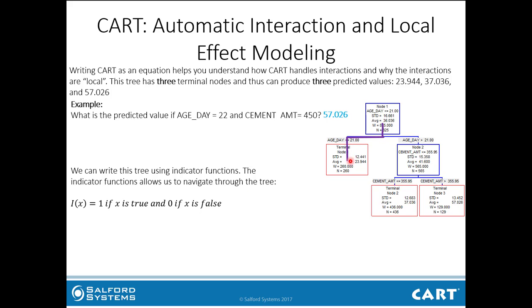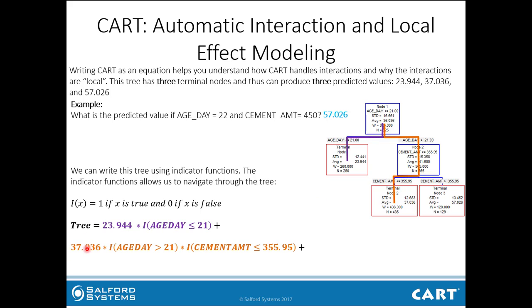Looking at the purple portion of the tree, we have 23.944 — the average for terminal node 1 — multiplied by the indicator for age_day being less than or equal to 21. For the orange portion, we have 37.036, which is the predicted value, and the path requires age_day being greater than 21, and cement amount being less than or equal to 355.95.